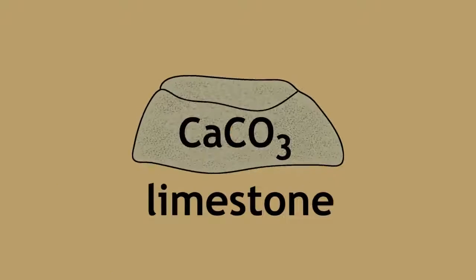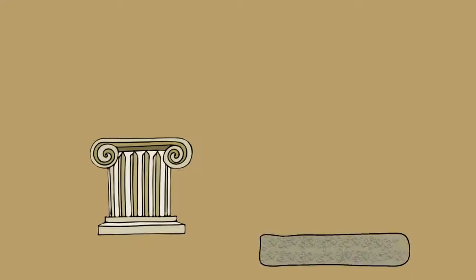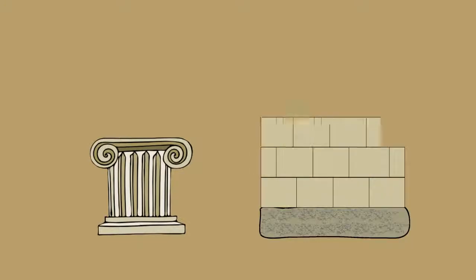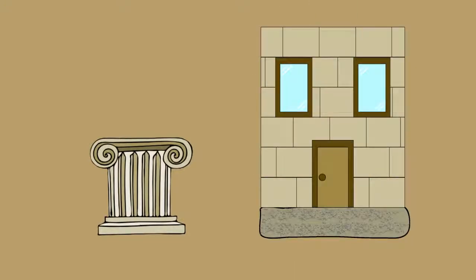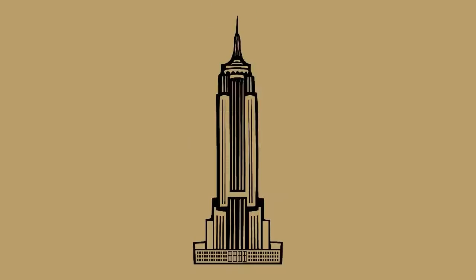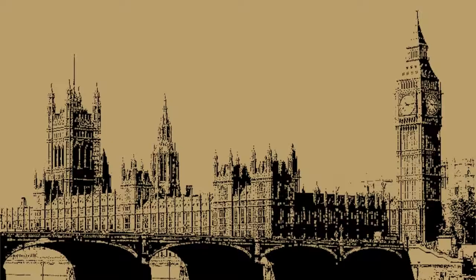Limestone can be used on its own. Many structures have been carved out of limestone, and many buildings have been built with mostly limestone. Some examples include the Empire State Building in New York, USA, and St. Paul's Cathedral and the Houses of Parliament in London, England.